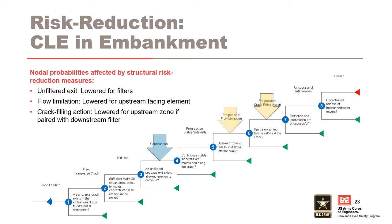These are the nodes that are typically targeted for concentrated leak erosion in the embankment. Providing a filter as a defensive measure is the most effective structural risk reduction measure. Modifications to the upstream cross section can also be performed. To achieve flow limitation, an upstream facing element could be constructed. To provide crack filling action, an upstream cohesionless zone could be provided, but it must work in conjunction with a downstream zone that is filter compatible.